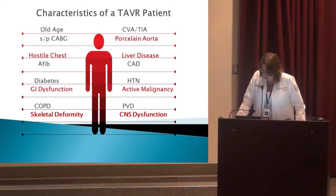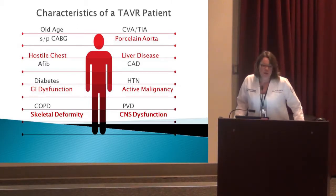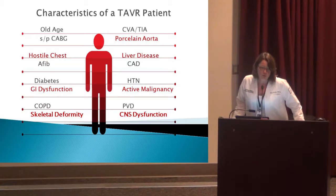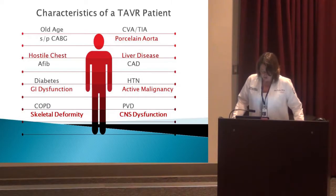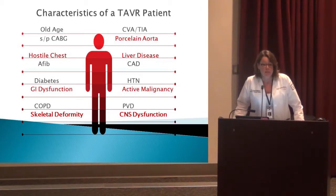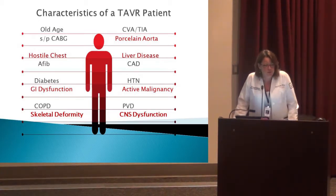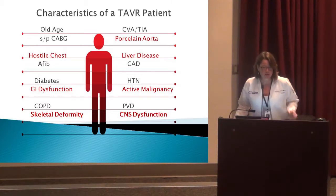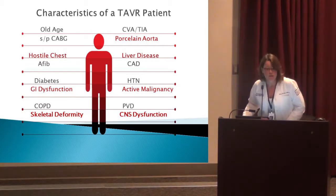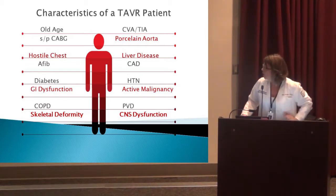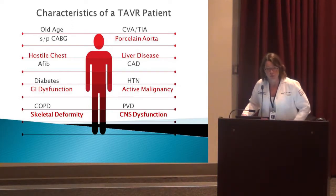When a patient comes in to be evaluated, they can have a myriad of comorbidities. The surgical risk score doesn't take into account certain diseases — labeled in red — such as liver disease, hostile chest from radiation, GI dysfunction like Crohn's disease, active malignancy, CNS dysfunction, and dementia. We typically don't perform TAVR on patients with moderate to severe dementia because outcomes are very poor. Skeletal deformities such as scoliosis and significant kyphosis are also not included in that surgical risk score.